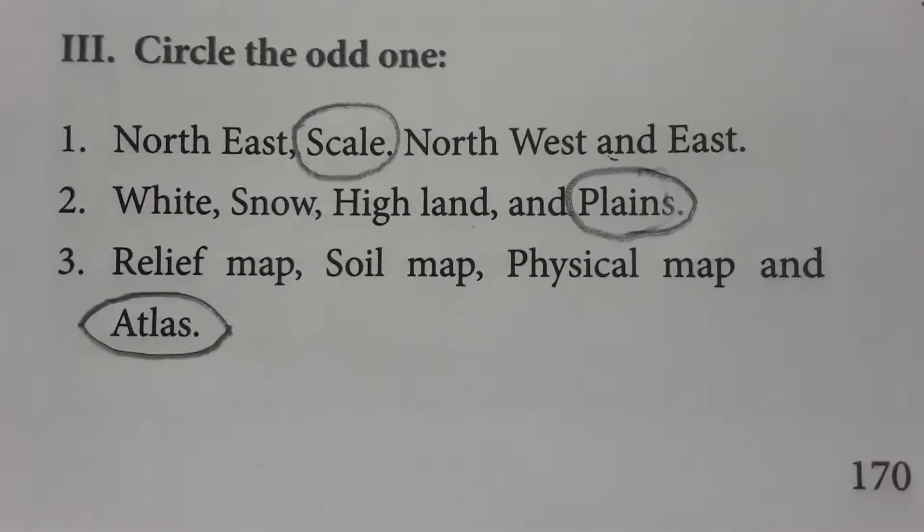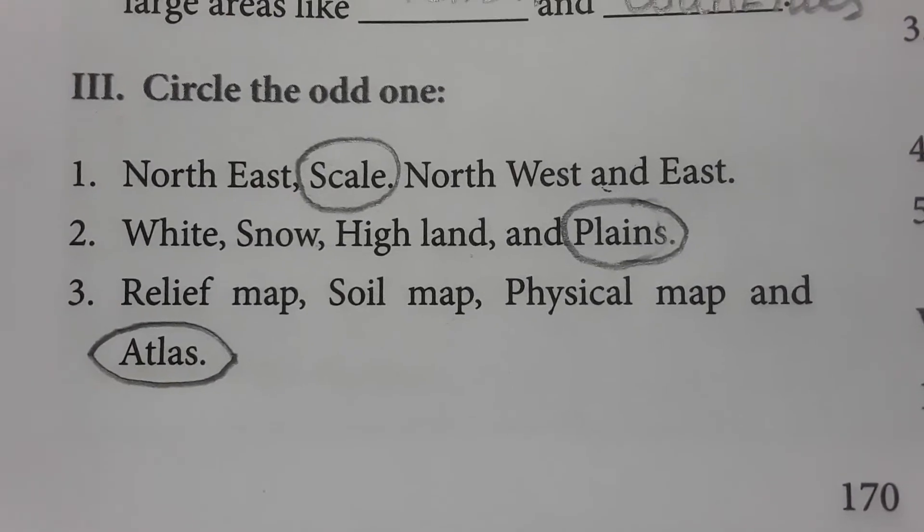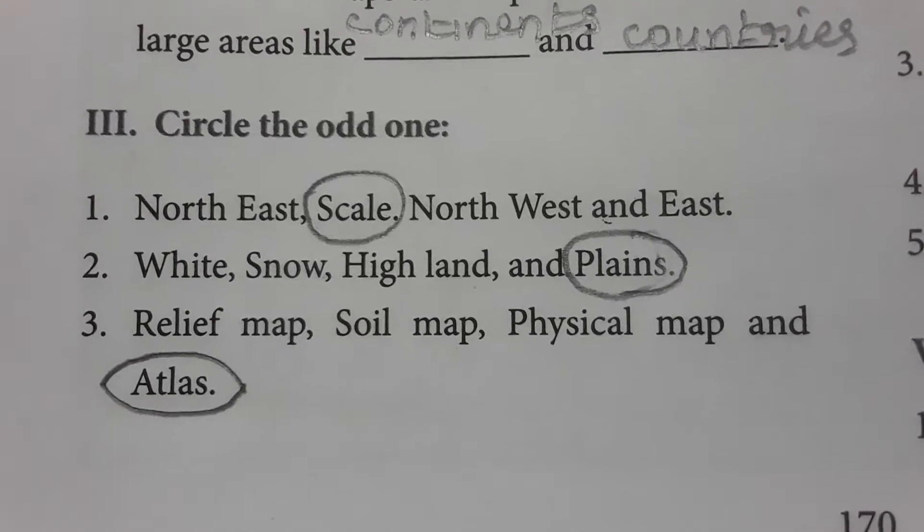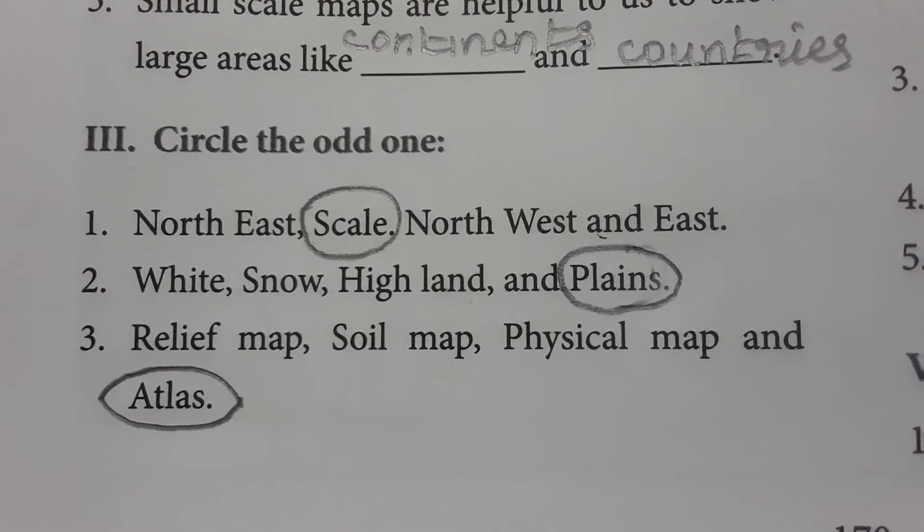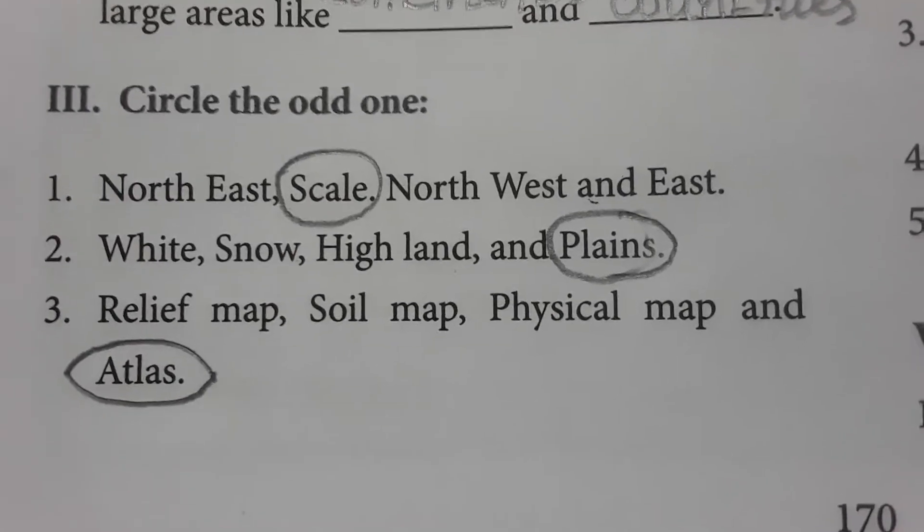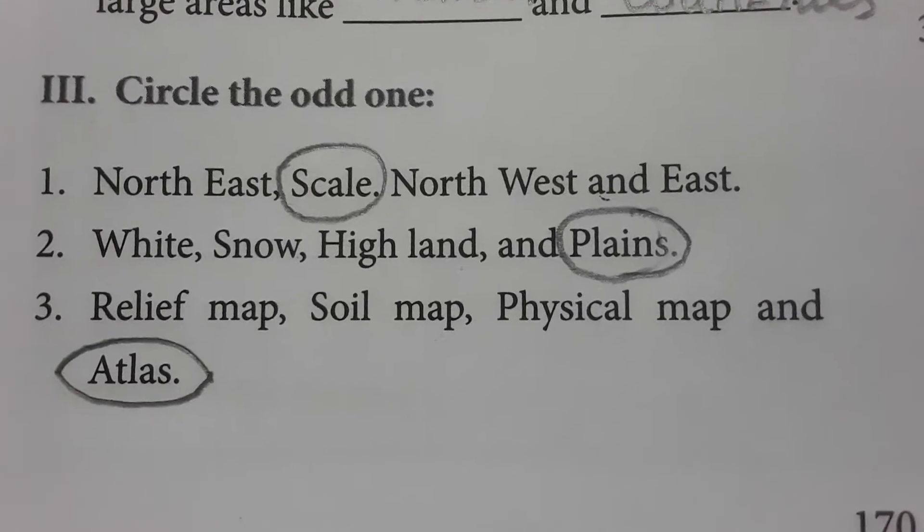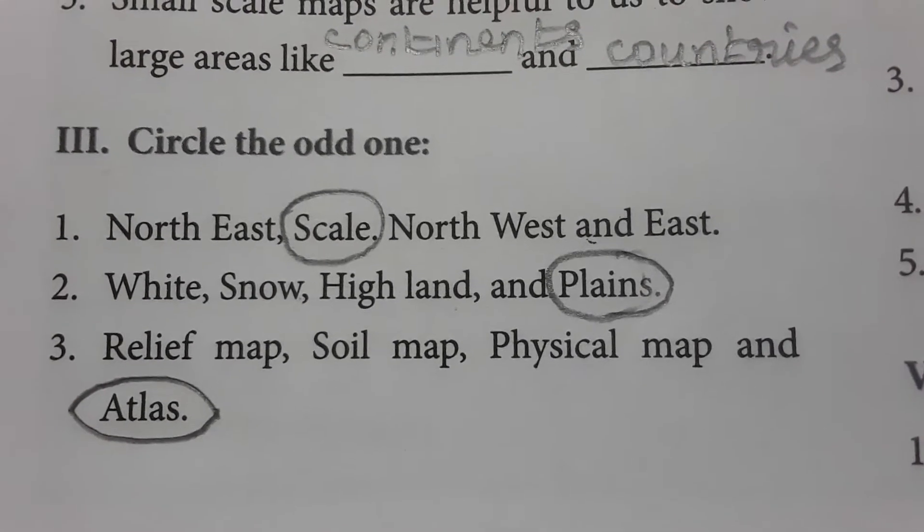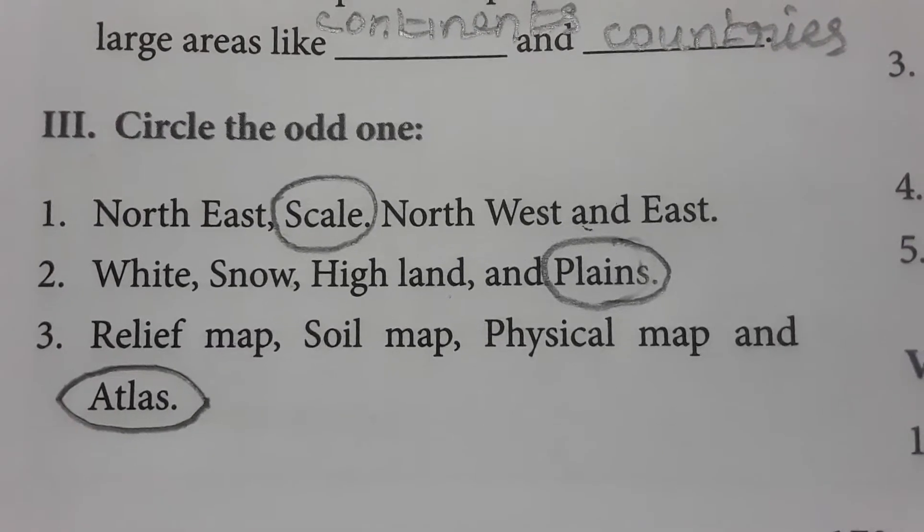Circle the odd one: North East, Scale, North West, and East. Among the four, North East, North West, and East are cardinal directions, whereas scale is a measurement. So scale is the odd one. Next: white, snow, highland, and plains. White is associated with mountains, snow happens in mountain regions, highland is another term for mountains. So plains is the odd one.